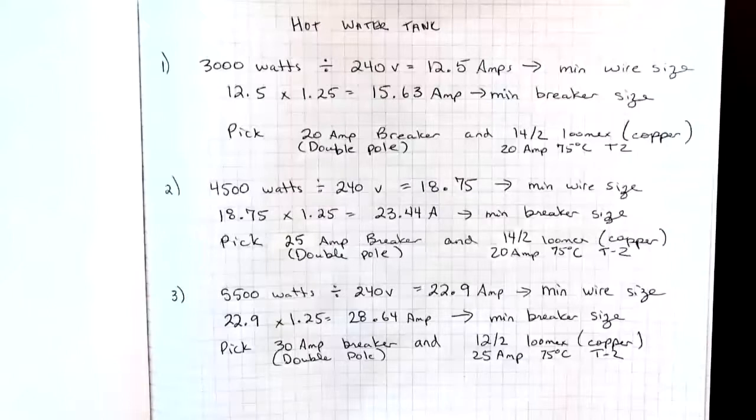3000 watts divided by 240 volts equals 12.5 amps. That is going to be our minimum wire size so that our ampacity of our wire is not less than our load.